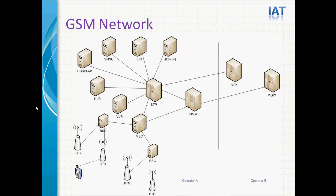This is the basic architecture of the GSM network. STP is the center of the GSM network. In case the network doesn't have any STP, the MSC will be the center of the network. STP is the Signal Transfer Point — all other nodes are connected with the STP for signal communication. The Media Gateway is used for voice gateway. Both STP and Media Gateway are connected with the external network. For example, if you have more than one operator, inter-operator signaling communication is done between STP to STP.